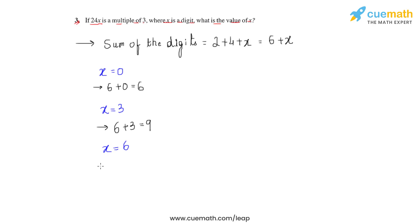If we assume the next value of x to be 6, the sum would become 6 + 6 = 12, which again is divisible by three. Let us now take the next value of x, which is 9.